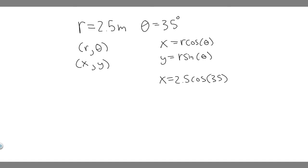And when you do this, make sure when you plug it into your calculator, your calculator is in degrees, because if it's in radians, it's going to be the wrong answer. So then for this, you're just going to do 2.5 times the sine of theta, which is 35 again.